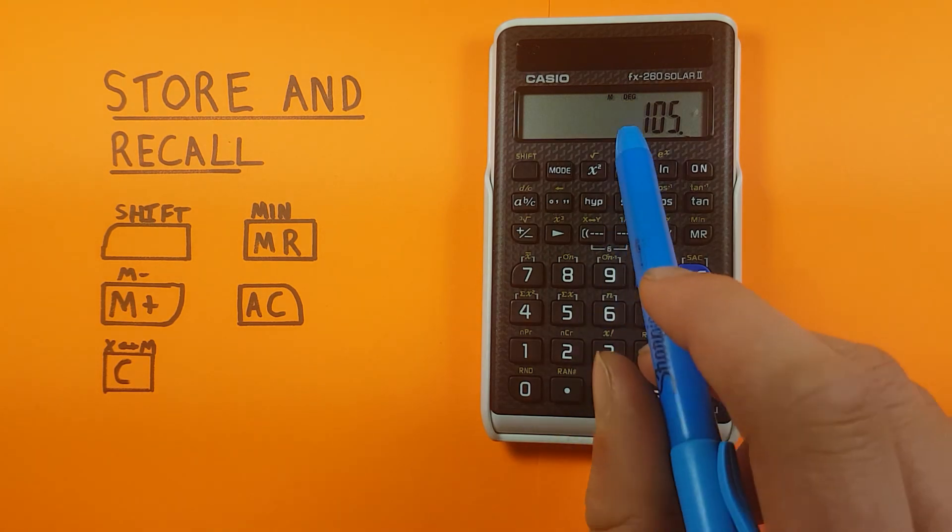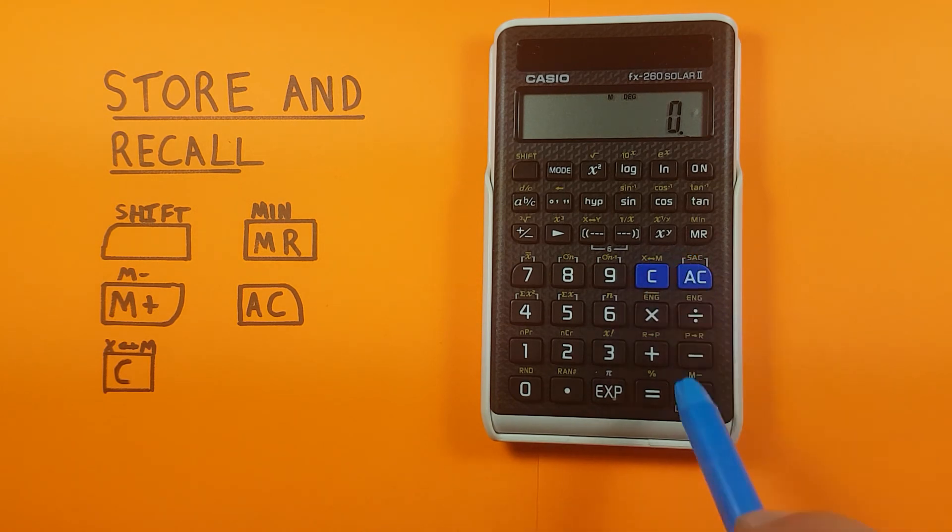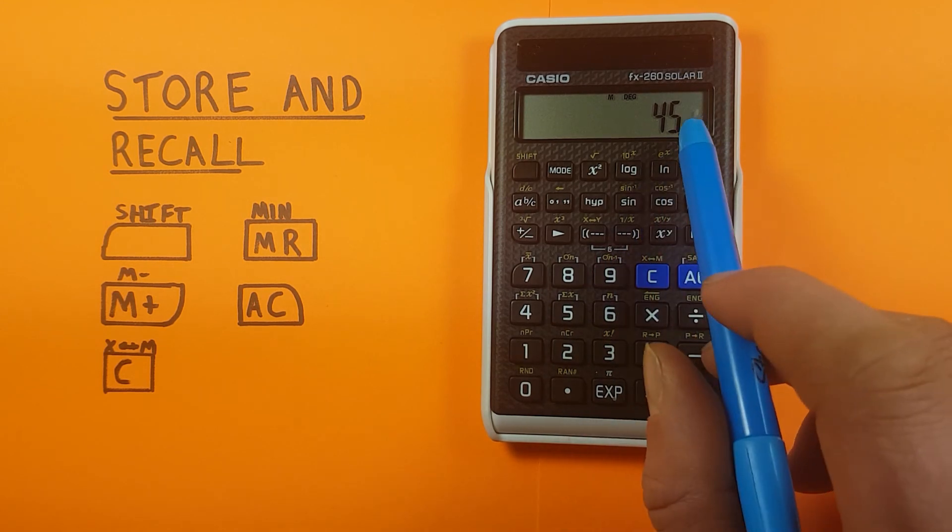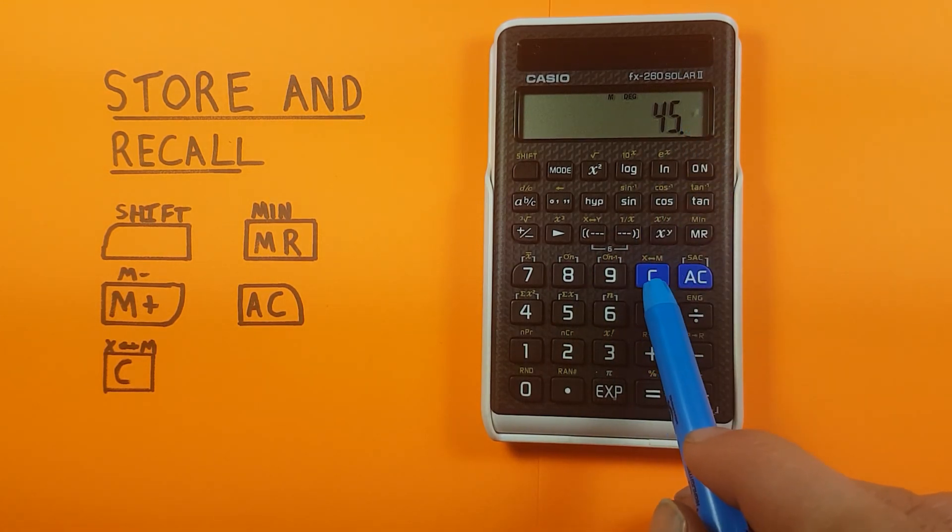Making sure that we still have that M on the screen, we can clear this. One more function we have is we can swap the screen with the memory. So to do this, let's say we have 45 and we want to swap this into our memory. We can use the shift function of the C key here.